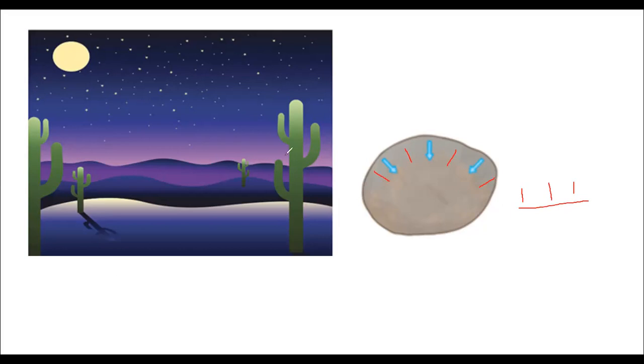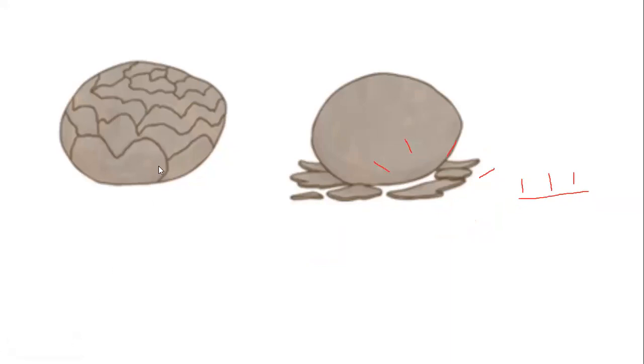And so the rocks in the desert regions are constantly expanding and contracting, expanding and contracting. Therefore, what will happen is that the rocks will begin to peel off layer by layer like an onion. Alright, so exfoliation is taking place and the rock is breaking up and is getting smaller and smaller. This is what we talk about when we talk about thermal expansion...